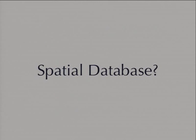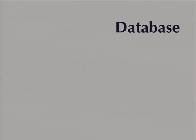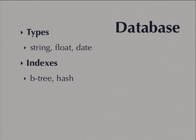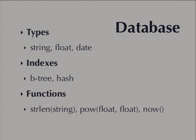So, spatial database. What am I talking about? A spatial database is just a database. So what's a database? A database provides random access to data. It's a storage system. It gives you standard types: strings, floats, dates. It gives you indexes, access methods that allow you to very quickly search through data of that type. And then it gives you functions for those types that allow you to do things analytical to them. So find the length of a string, or the exponential power of some numbers, or the current time. These are all standard database functions that operate on the standard database types.